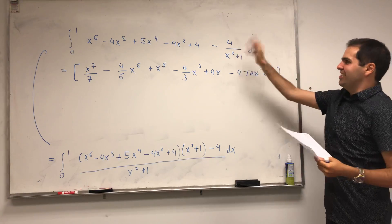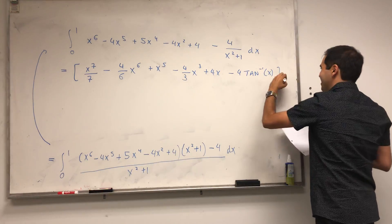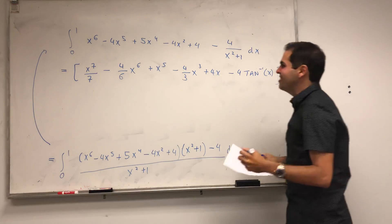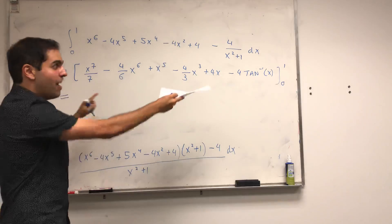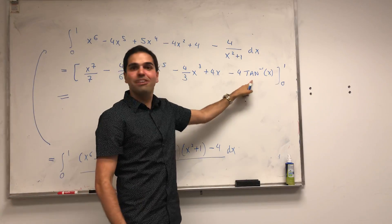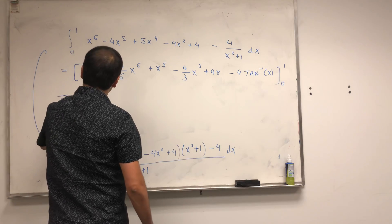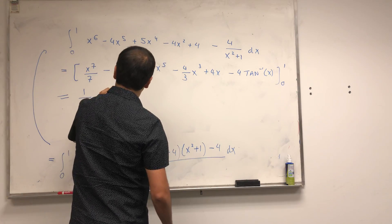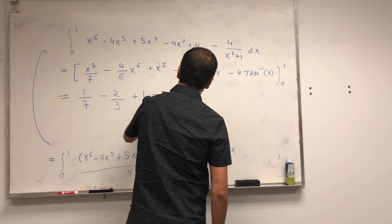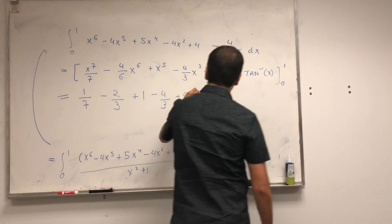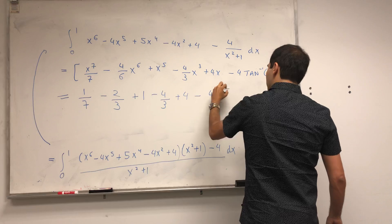The arctangent term is the outsider — it's not in the polynomial group. But we really want to respect arctangent, because this is part of the unbelievable thing. So we get 1/7 minus 2/3 plus 1 minus 4/3 plus 4, minus 4 times arctangent of 1, which is pi over 4.